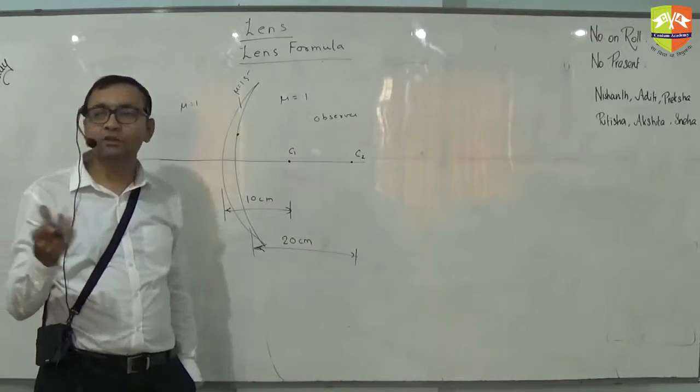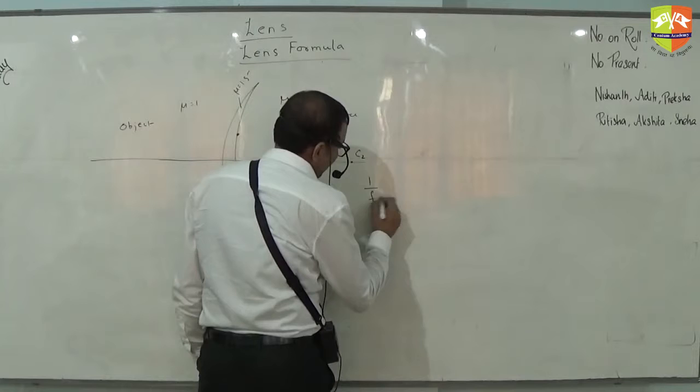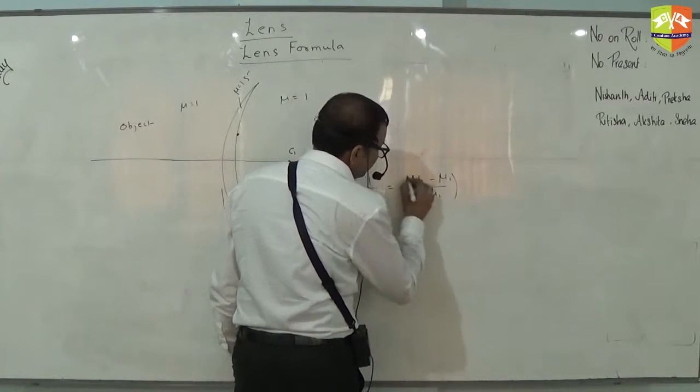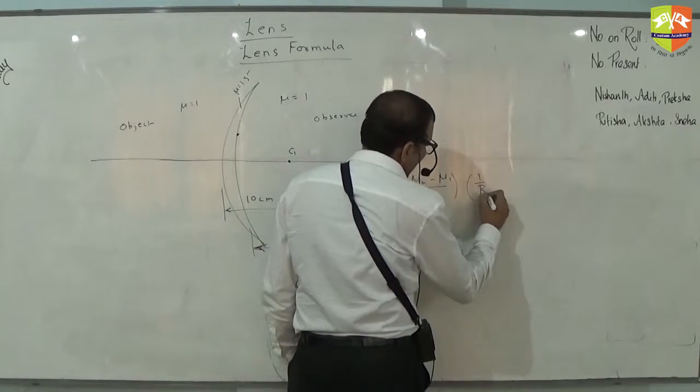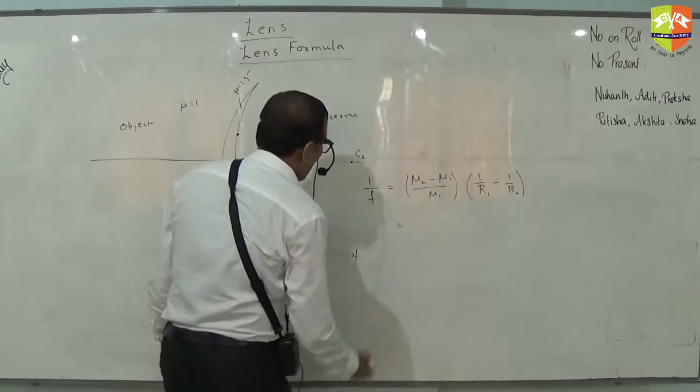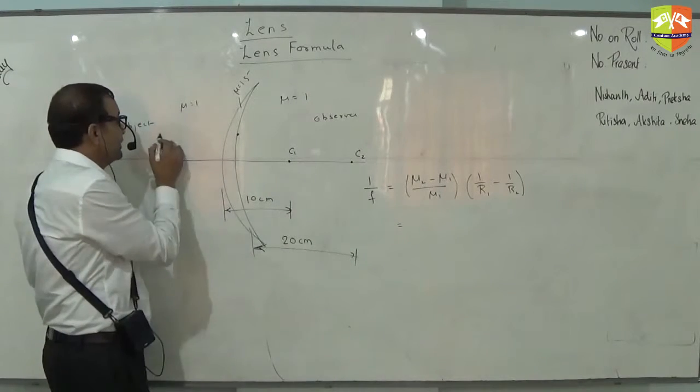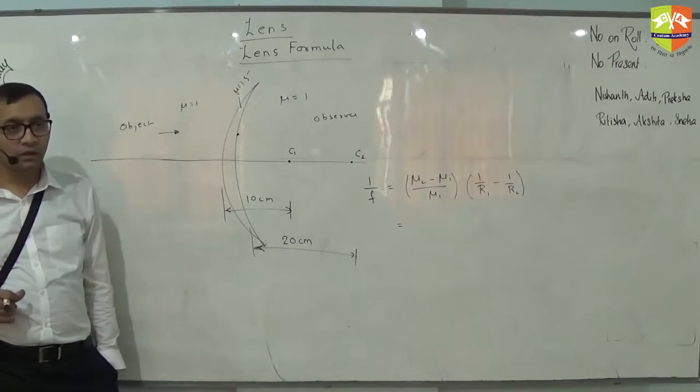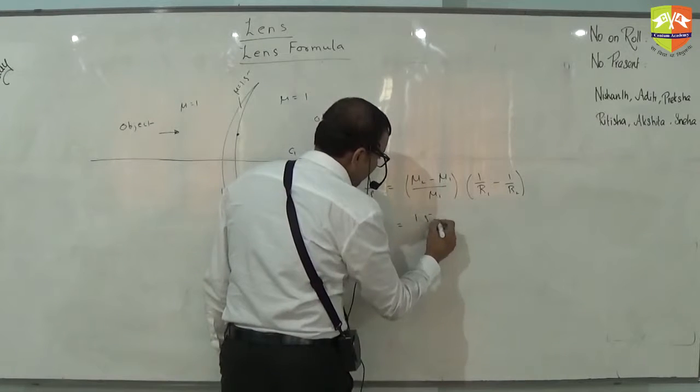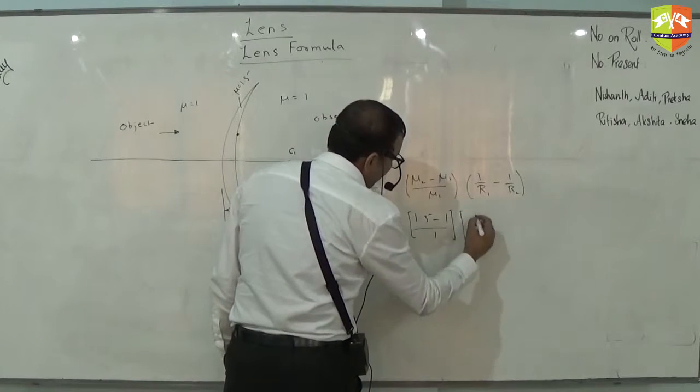So whenever you hear focal length and your radius of curvature is given, lens maker formula should immediately strike. So 1 by f equals mu2 minus mu1 divided by mu1, times 1 by r1 minus 1 by r2. Now object is this side, observer is that side, so the incident ray will come from here. So mu2 is 1.5, mu1 is 1. What is r1?